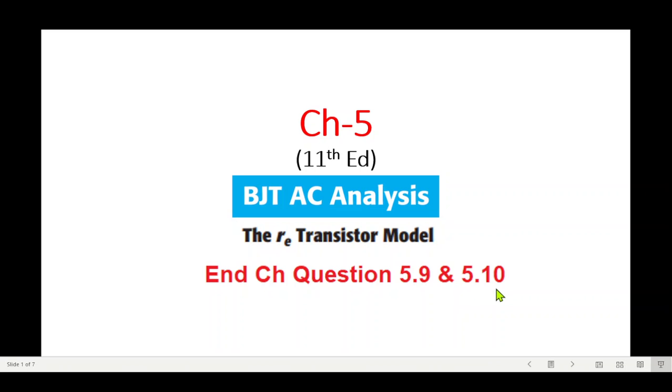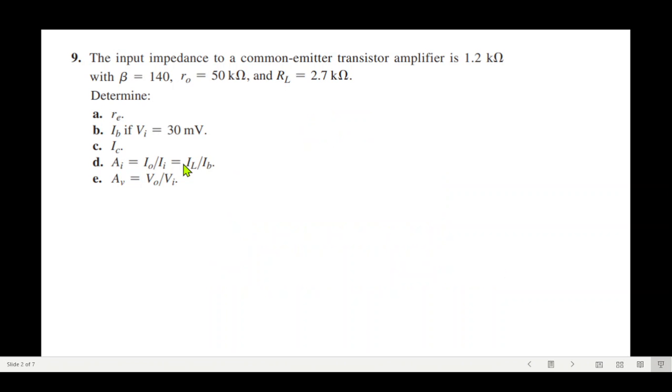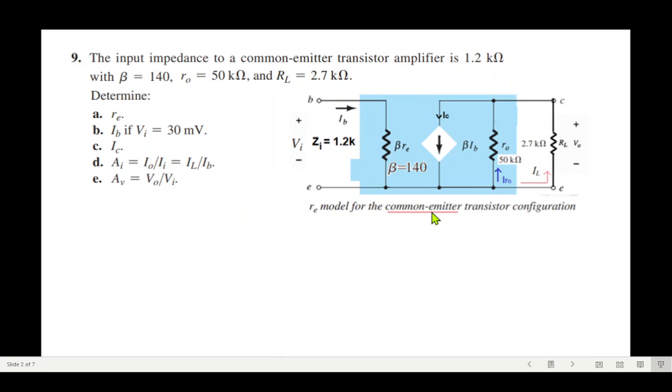We'll solve questions 5.9 and 5.10. For question number 9, the input impedance to a common emitter transistor amplifier is given: beta given, ro given, rl given. Although not given in the question, this is the circuit for the common emitter transistor. We'll plug in the values: zi given, beta given here, ro given 50 kilo, and rl 2.7 kilo. We have to find these five parameters one by one.